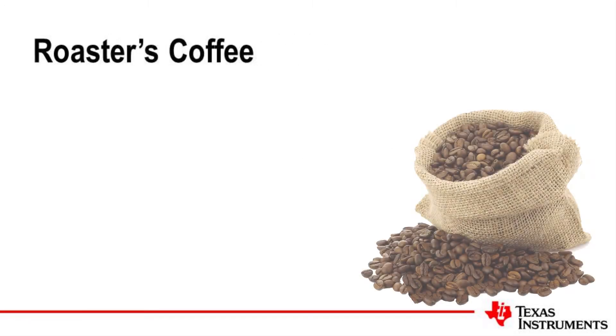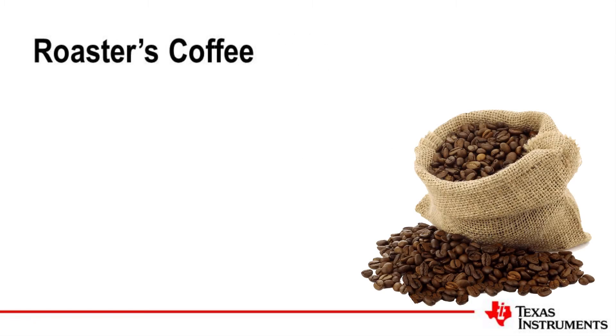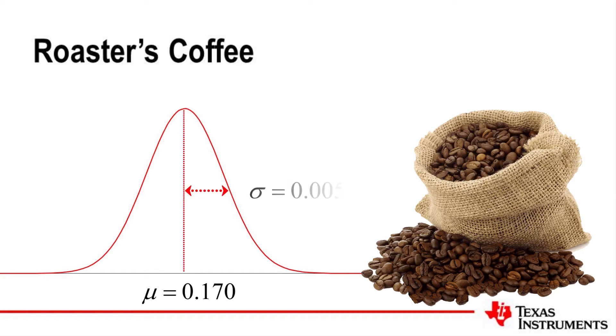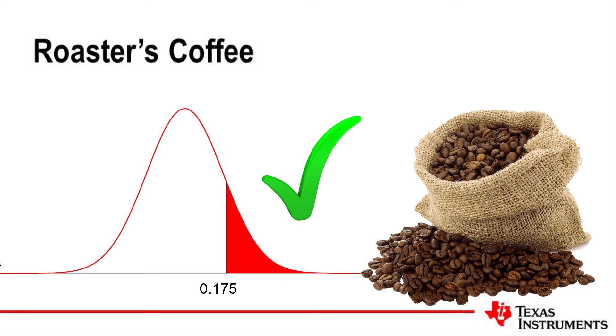A good cup of coffee starts with perfectly roasted beans. Roasters' coffee selects their beans carefully. Prior to roasting, the beans are dried and weighed. The weight of the dried beans is normally distributed with an average of 0.17 grams and a standard deviation of 0.005 grams. Beans are automatically accepted if they weigh more than 0.175 grams and rejected if they are less than 0.16 grams.